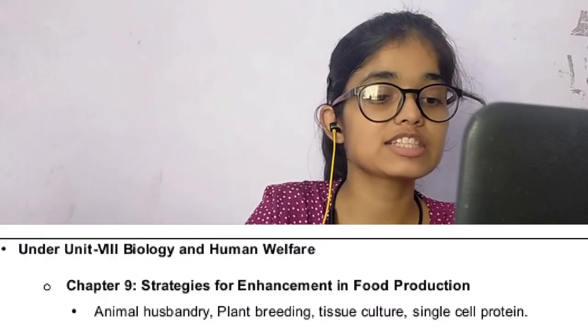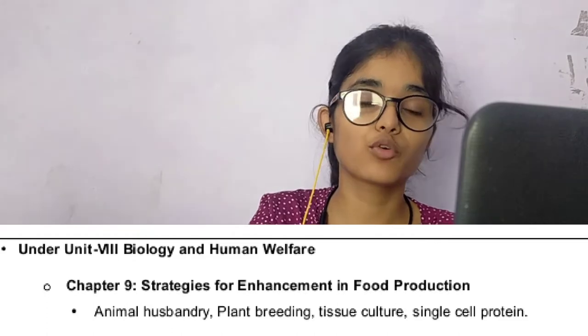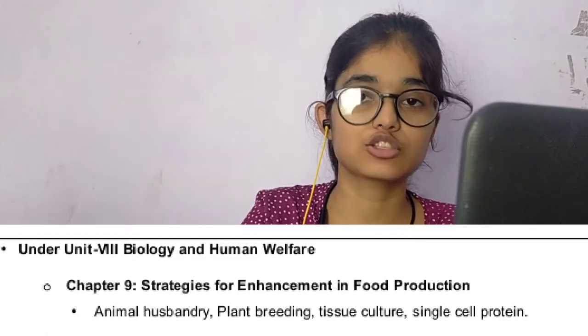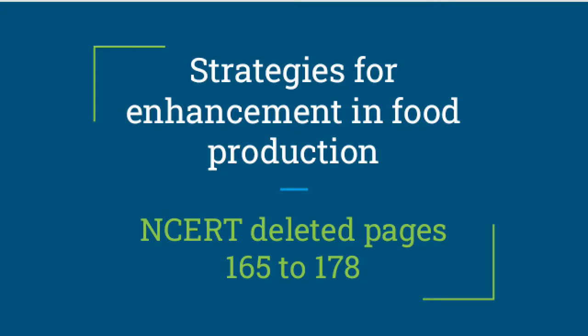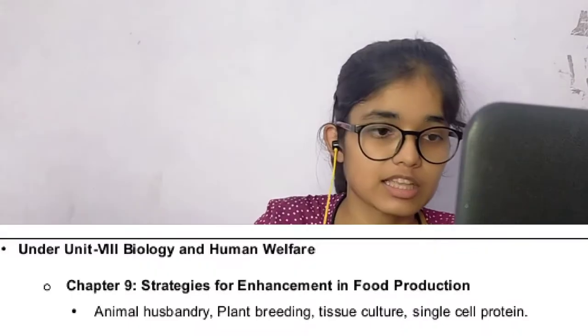Now let's talk about Unit 8, Biology and Human Welfare. Chapter 9, Strategies for Enhancement in Food Production, has been removed — it is not necessary to read it. But Chapter 8, Human Health and Disease, and Chapter 10, Microbes in Human Welfare, are both fully studied.